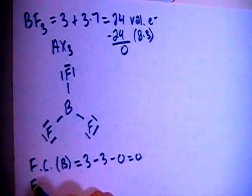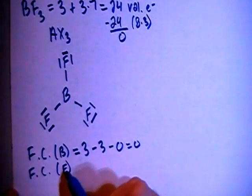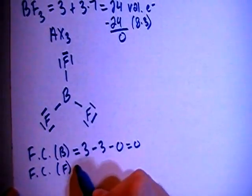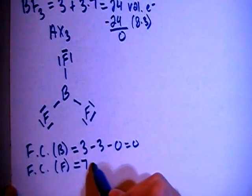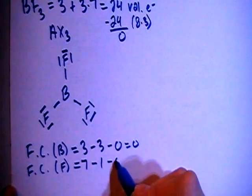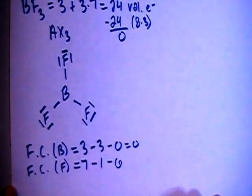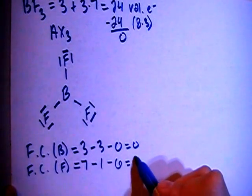And then the formal charge on each of the fluorines, and they all have the same setup, so their formal charges will all be equal. So that's going to be the 7 valence brought in for each one, minus a single bond on each fluorine, minus the 6, 2, 4, 6 non-bonding electrons on each fluorine. And those also have a formal charge of 0.